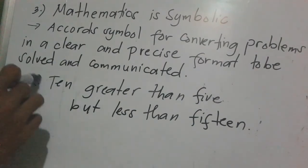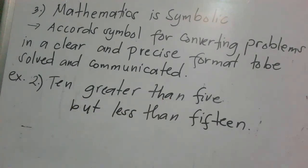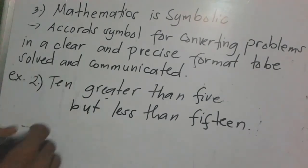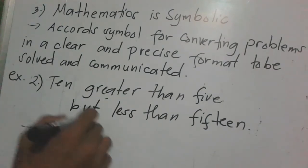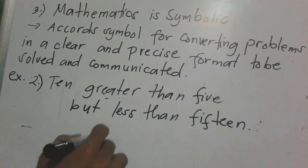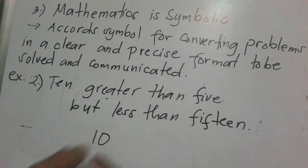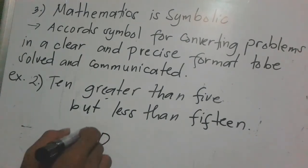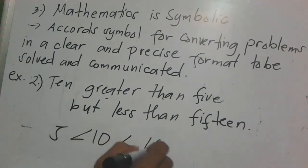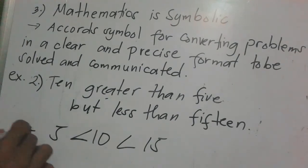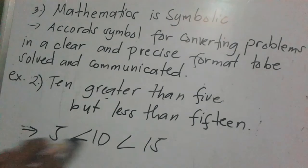Example 2: '10 greater than 5 but less than 15.' So 10 is greater than 5 but 10 is less than 15. Converting: 5 < 10 < 15. That's how we convert it to symbols.